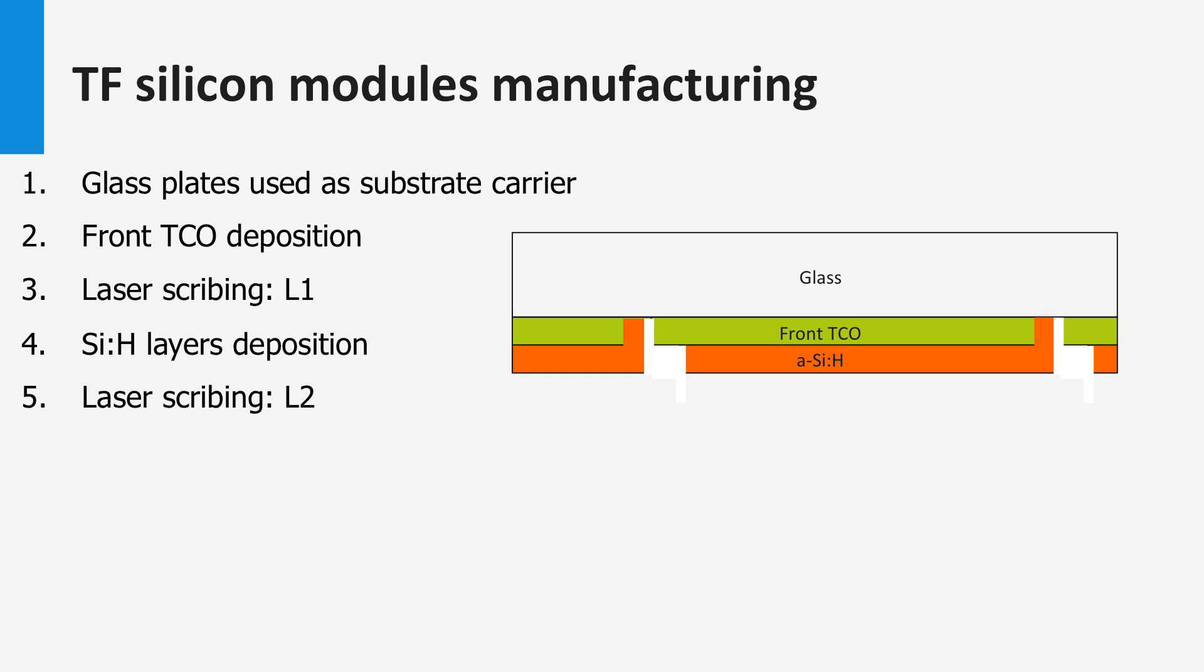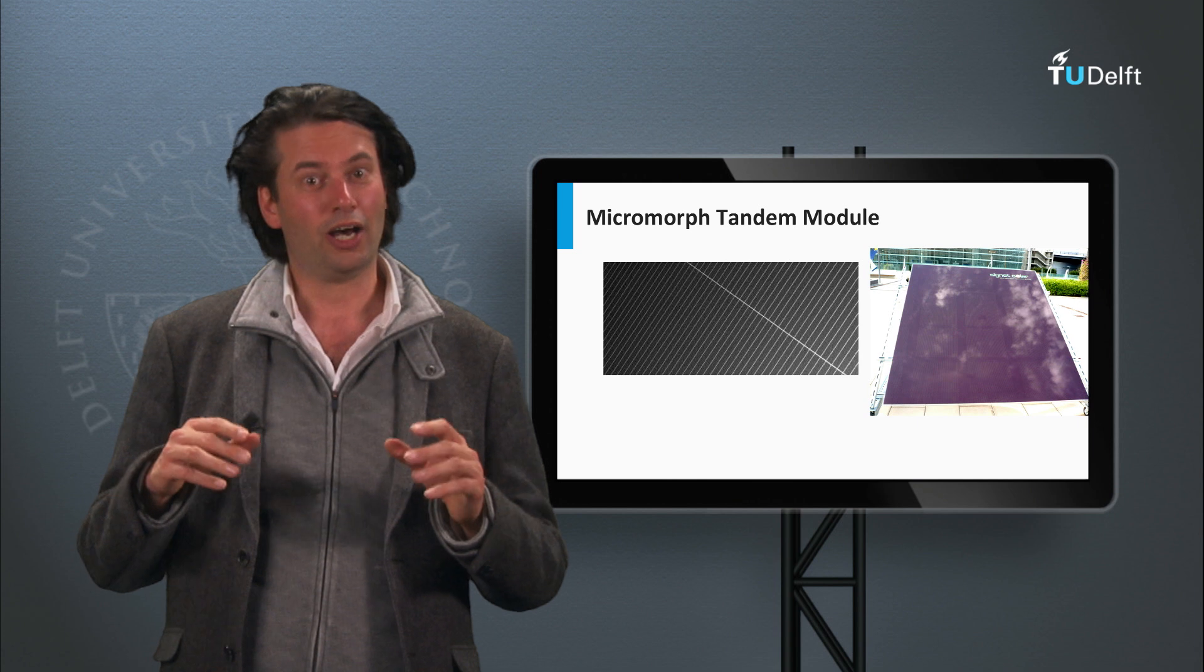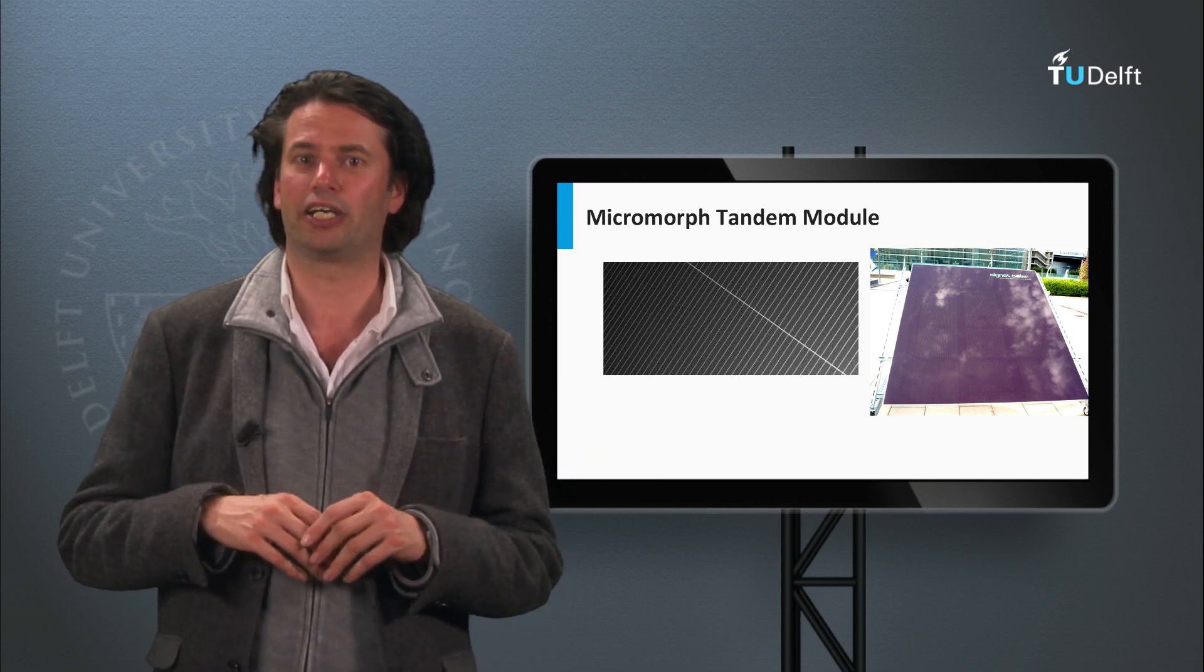After the silicon process step, a second laser scribing step is made. The metal back contact is deposited, after which the last laser scribing step is used. The whole cell is finished by covering it with an encapsulant material. In this interconnection scheme the metal back contact is connected with the front TCO contact of the next cell. A module consists of long strips of solar cells which are interconnected.